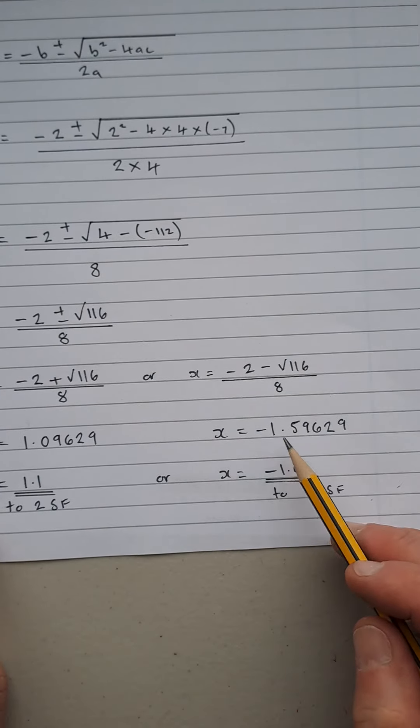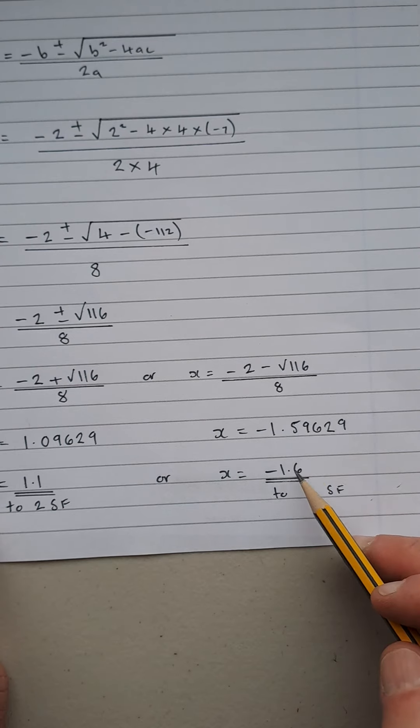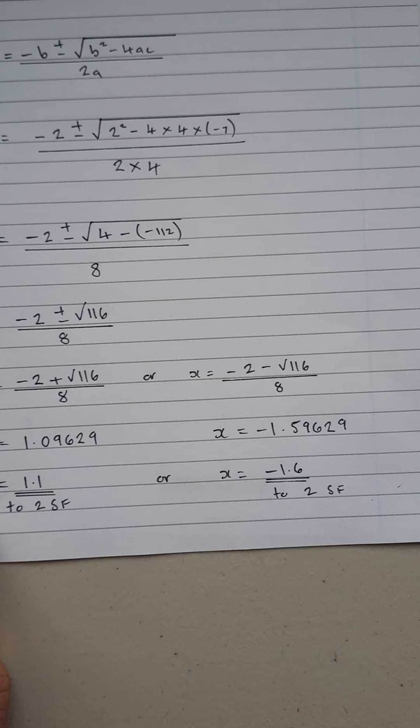And for this one over here, there's your first, there's your second, that 9 makes the 5 a 6, so it's minus 1.6 to two significant figures and these are your two answers.